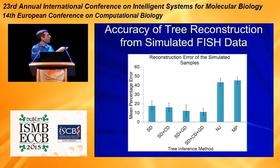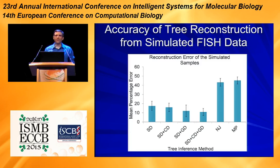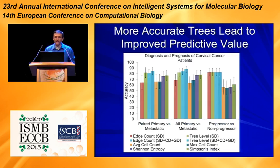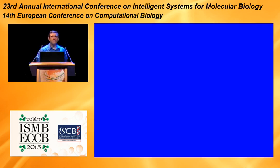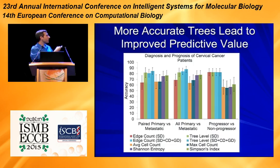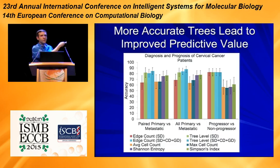Even the simplest models substantially outperform off-the-shelf phylogenetic algorithms in trying to reconstruct trees from these data. And these better trees lead to better predictions — more accurate classification from the old trees versus the newer trees versus non-tree-based features.